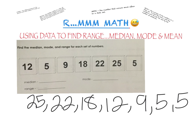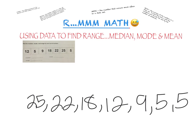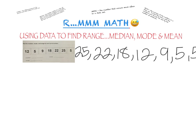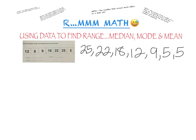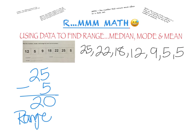Okay, so we have two fives. Do I have to write both fives down? Yes, absolutely. If it's in my data set, I write it down. If I had five fives, I would write all five down. So now I have them in order from greatest to least. Let's find the range. To find the range, it is the difference — and difference means subtraction. So I'm looking for the difference between the greatest and the least number. The greatest is 25, the least is 5, so 25 minus 5. Excellent. My range is 20.